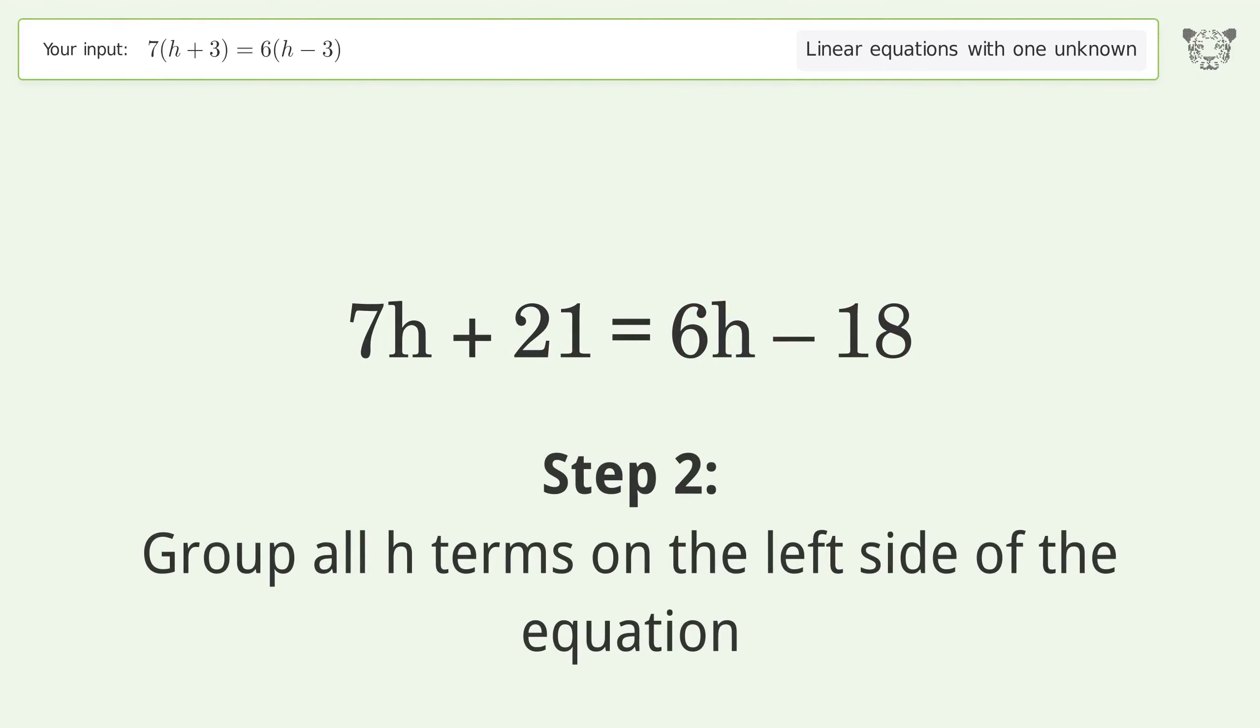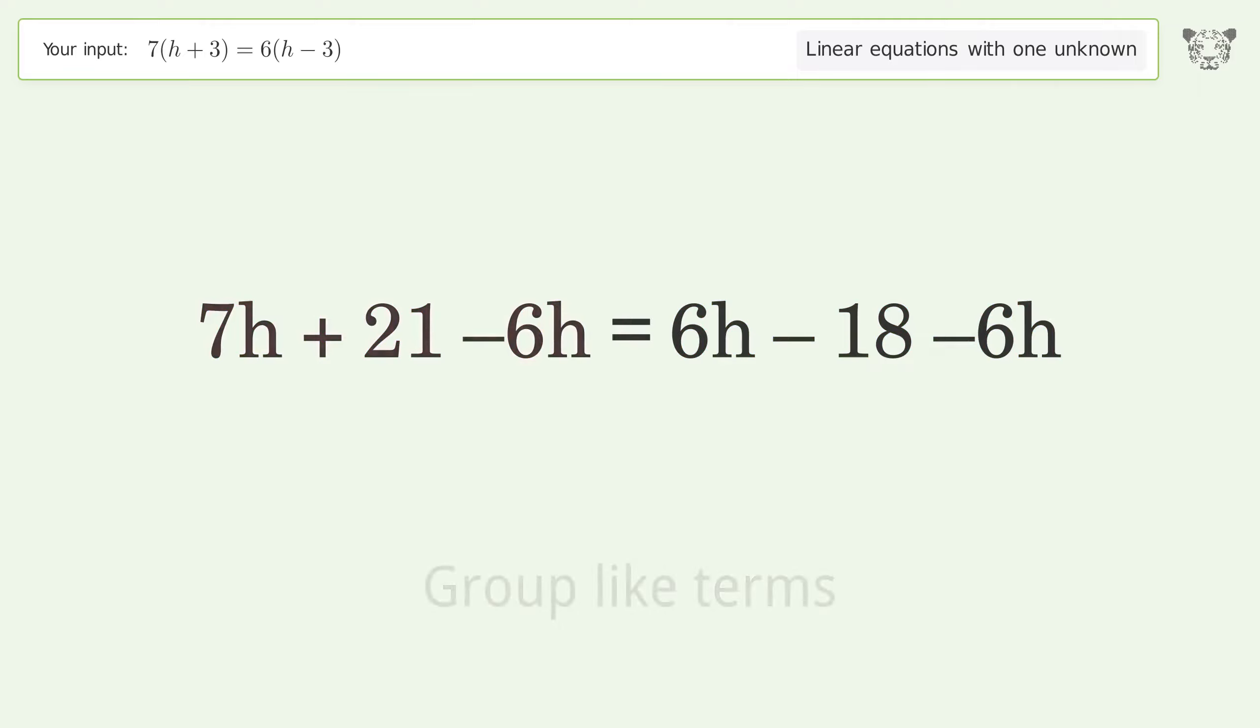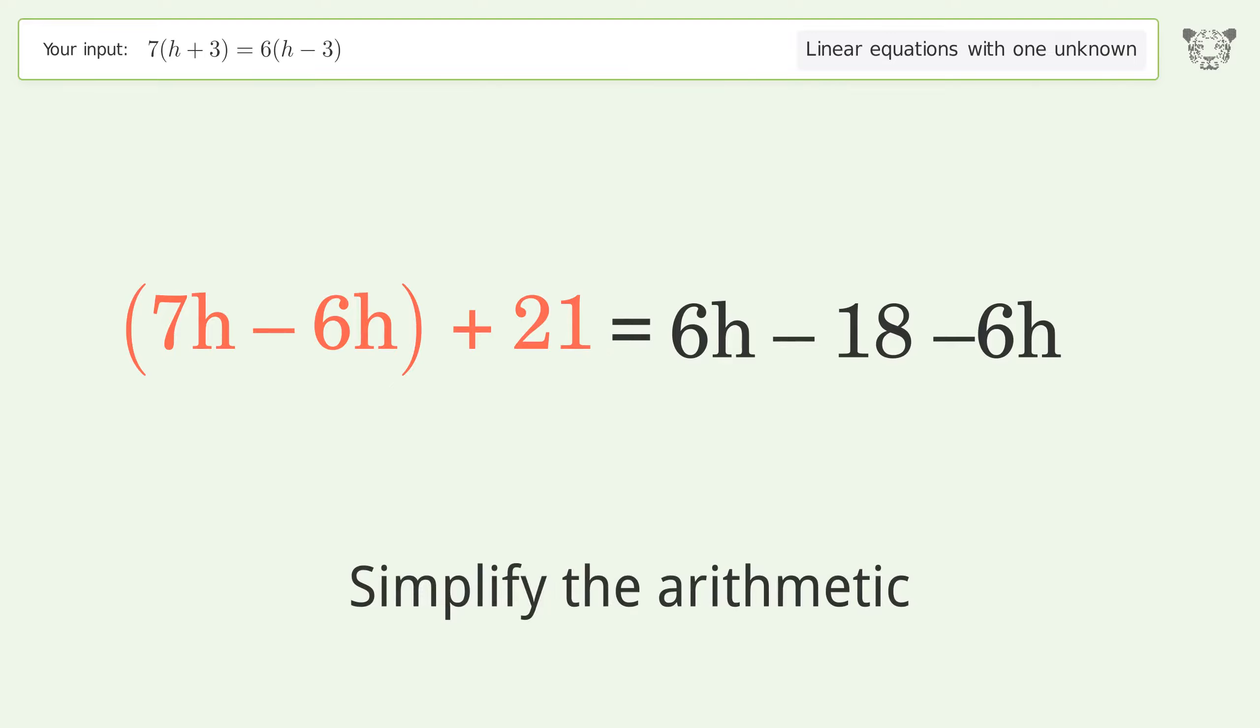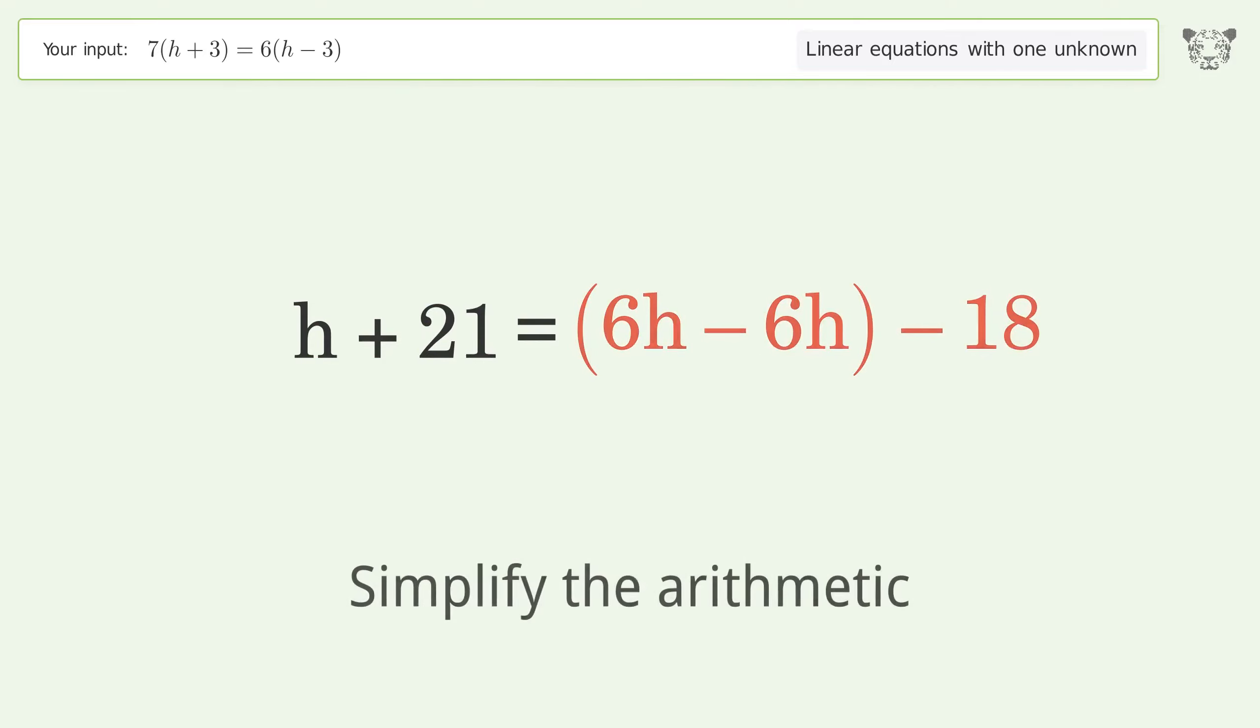Group all h terms on the left side of the equation. Subtract 6h from both sides. Group like terms. Simplify the arithmetic. Group like terms. Simplify the arithmetic.